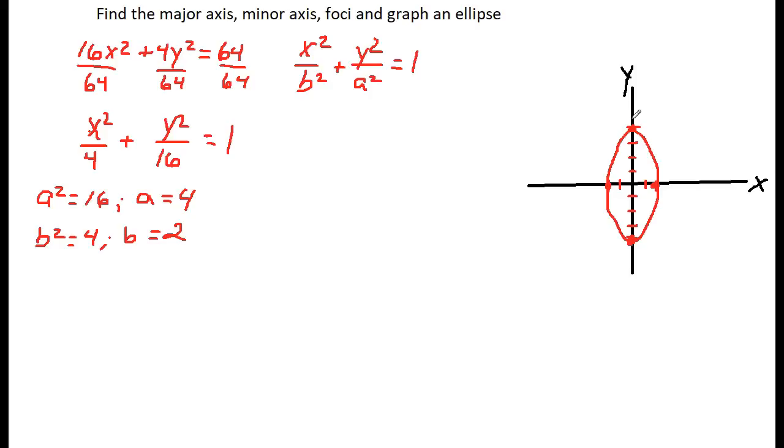Now, what I have to do is identify the foci and find them. I have to use c squared equals a squared minus b squared. Well, we've already got a squared and b squared here, so c squared equals 16 minus 4.